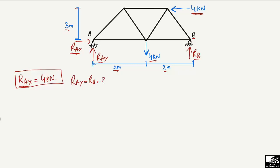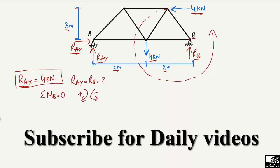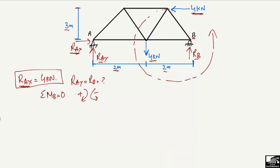To find these, we can use the equilibrium equation. Let's take the summation of moments at point B equal to zero. We will start with the 4 kilonewton horizontal load — this load is acting horizontally and creates a moment about point B in the counterclockwise direction. Let's assume clockwise is positive and counterclockwise is negative. So this gives minus 4, multiplied by the moment arm, where the moment arm is the perpendicular distance from the line of action to point B, which is 3 meters.